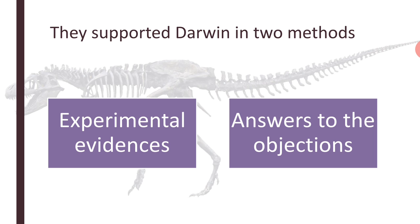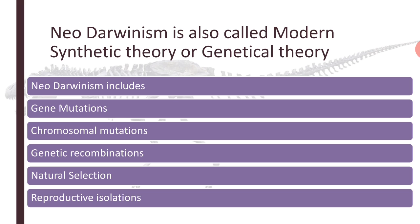Neo-Darwinists are those scientists who supported Darwin in all aspects. They followed two methods: they gave experimental evidence and they came out with reasonable answers to the objections in Darwinism. Neo-Darwinism is also called the modern synthetic theory or genetical theory. Modern synthetic theory includes gene mutations, which are also called point mutations, because genes are situated on chromosomes at specific locations called loci. Any change taking place at the level of a gene is called a gene mutation or point mutation due to their minute nature.